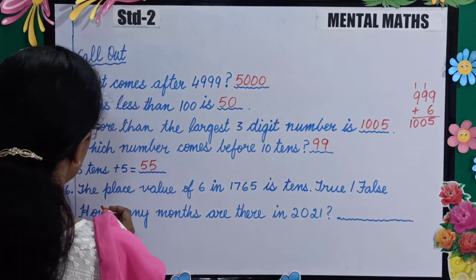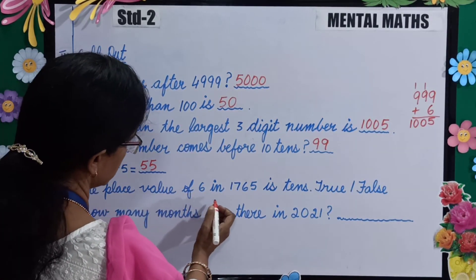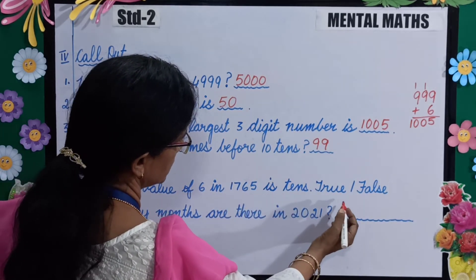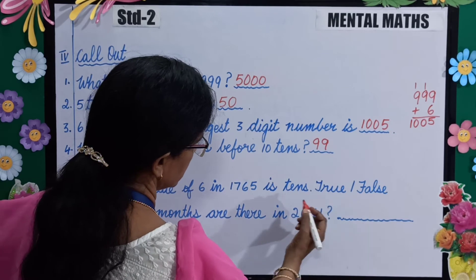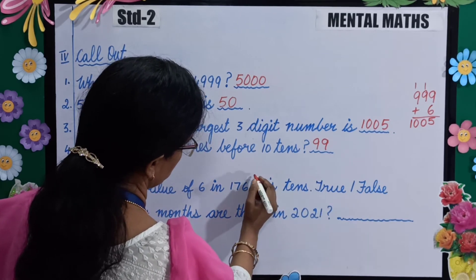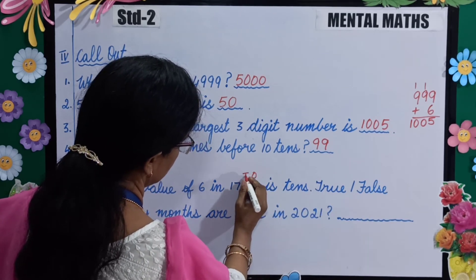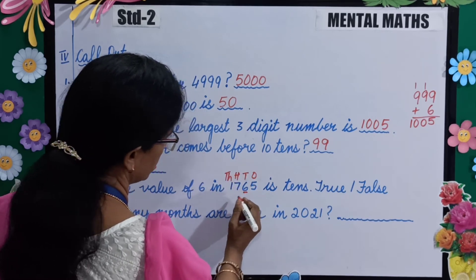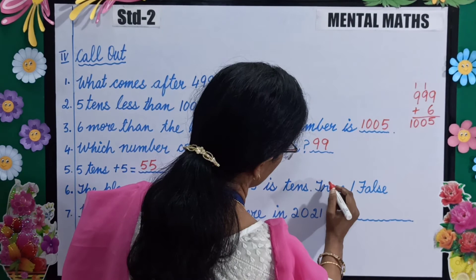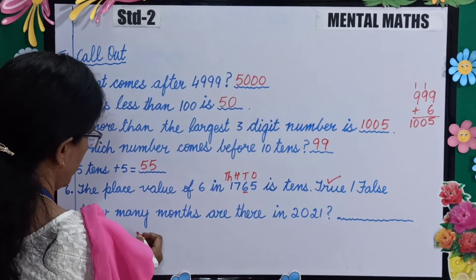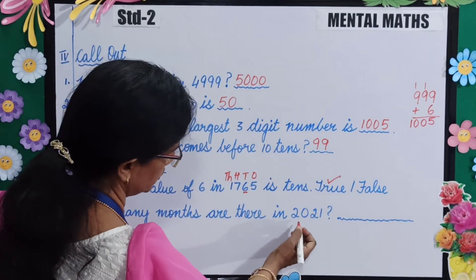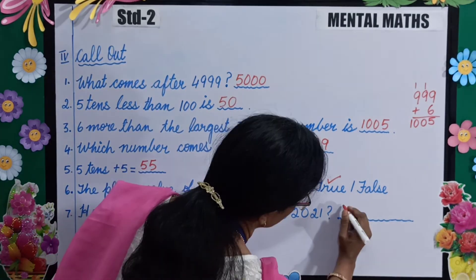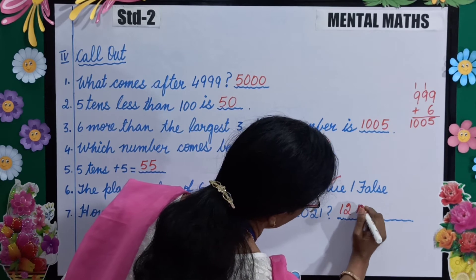Next, the place value of 6 in 1765 is tens — is it true or false? It is true: ones, tens, hundreds, thousands — so the place value of 6 is tens. You will put a tick here. Now, how many months are there in 2021? Yes, very good — 12 months.